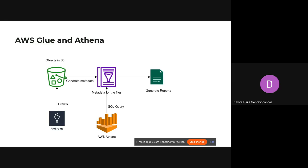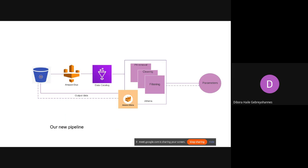We chose AWS services because it's really easy to integrate this new pipeline since our files are already stored in our S3 buckets. Our data scientists and analytics team members provide parameters, we generate a query based on those parameters and send them to Athena. Athena handles all the processing, uses the data catalog we generate and update every few hours, and stores results back into S3. This solved our scaling issues.